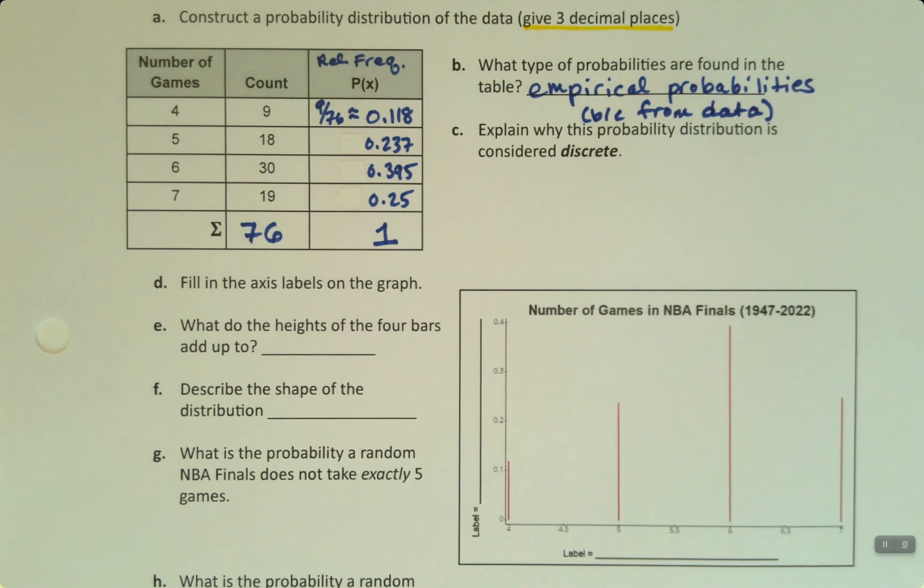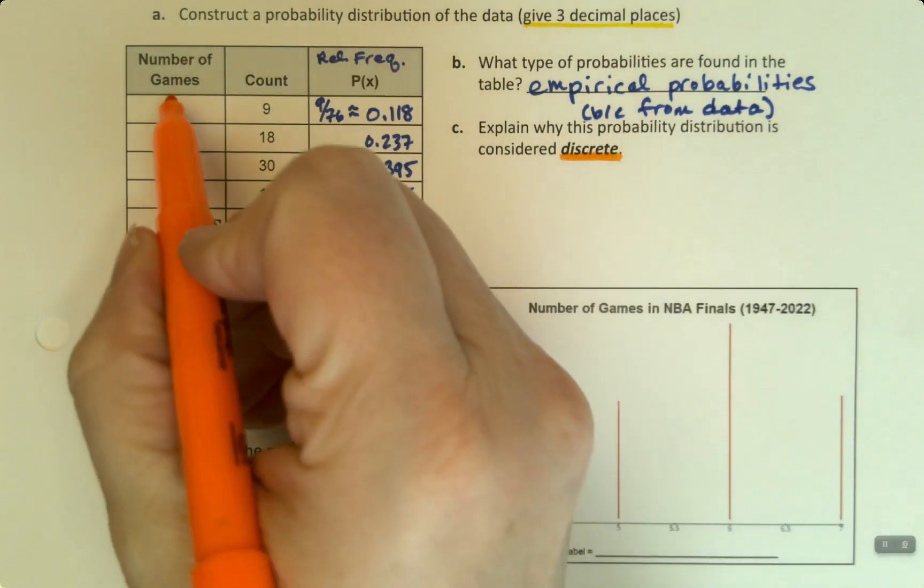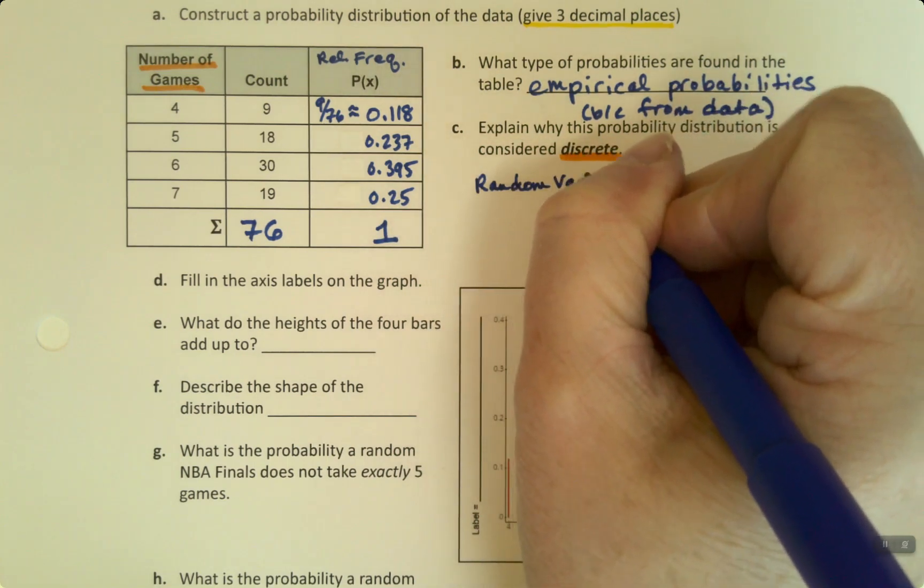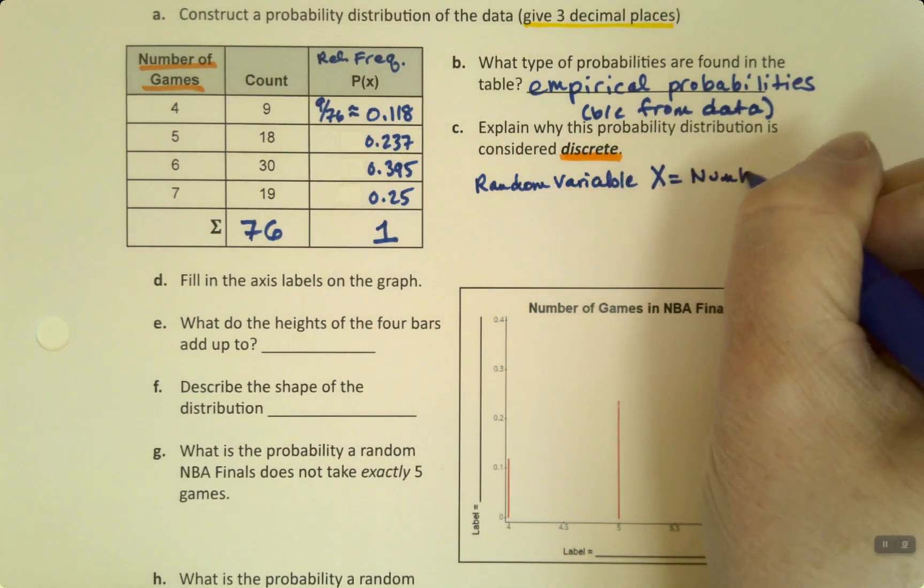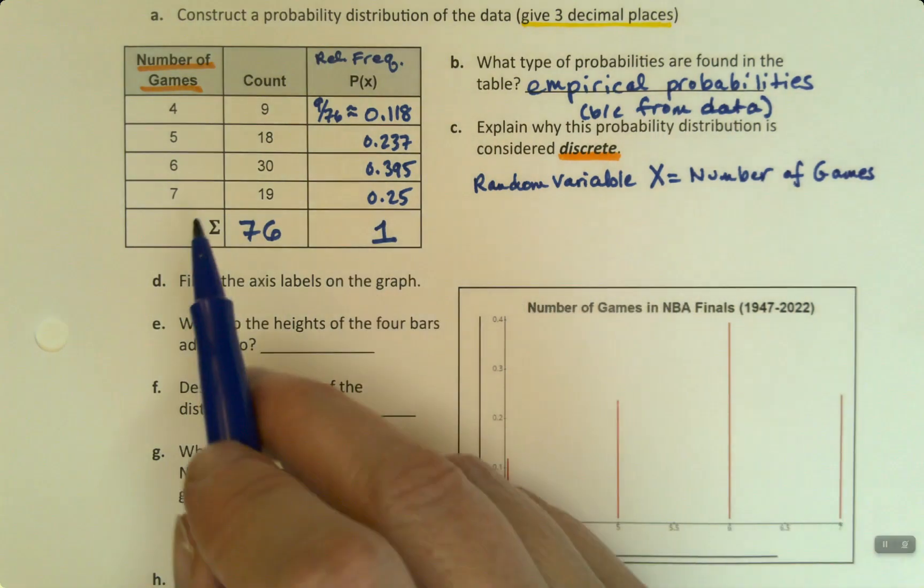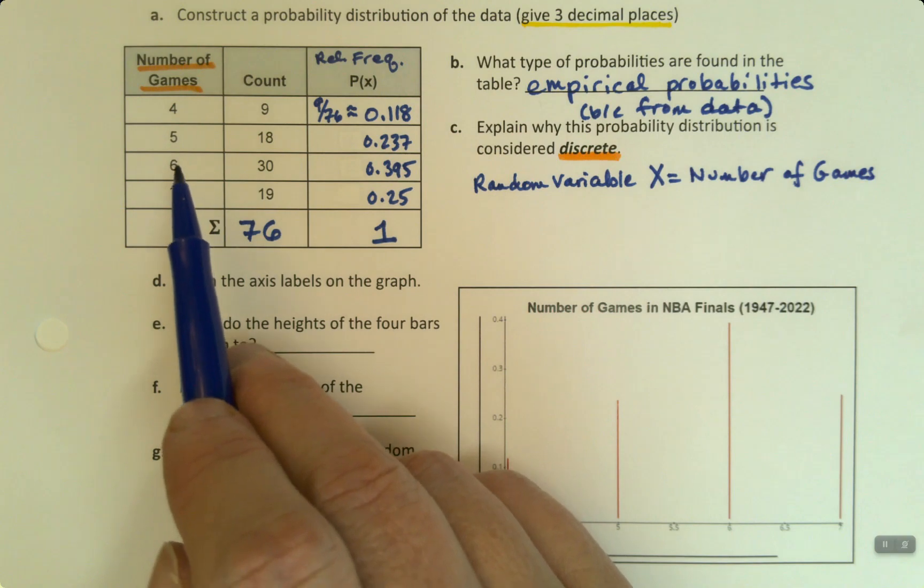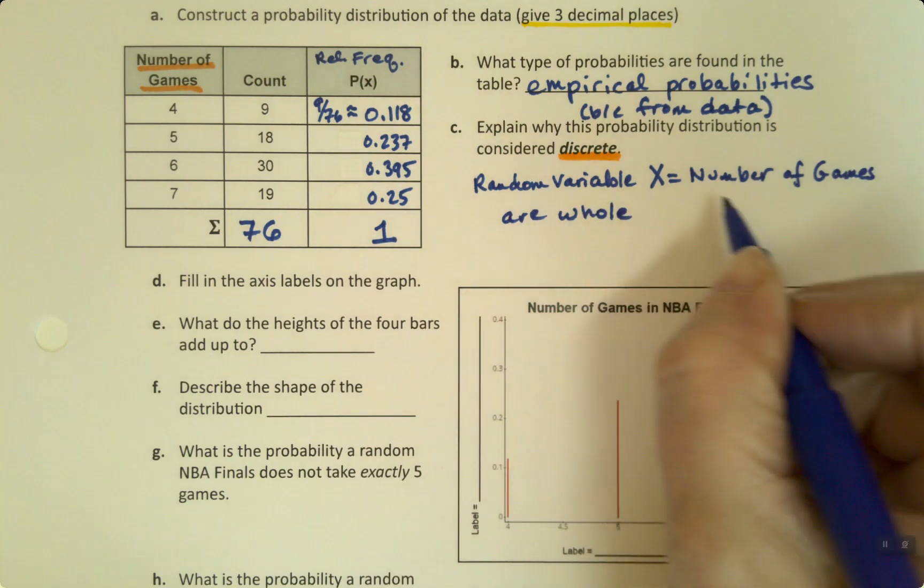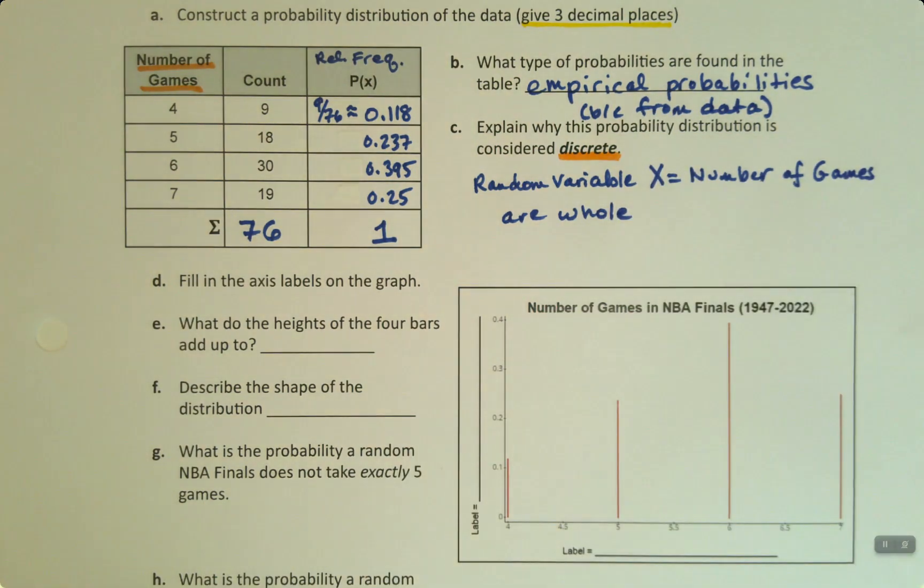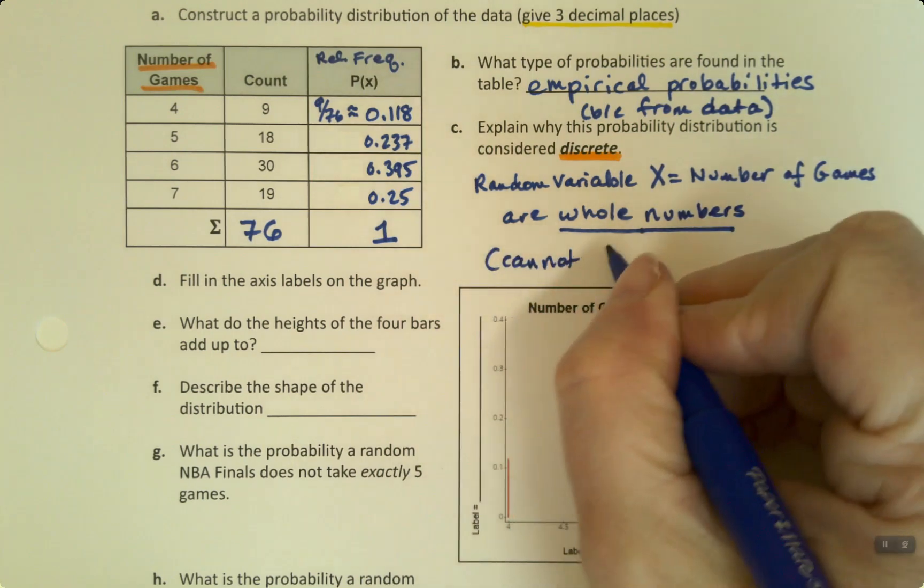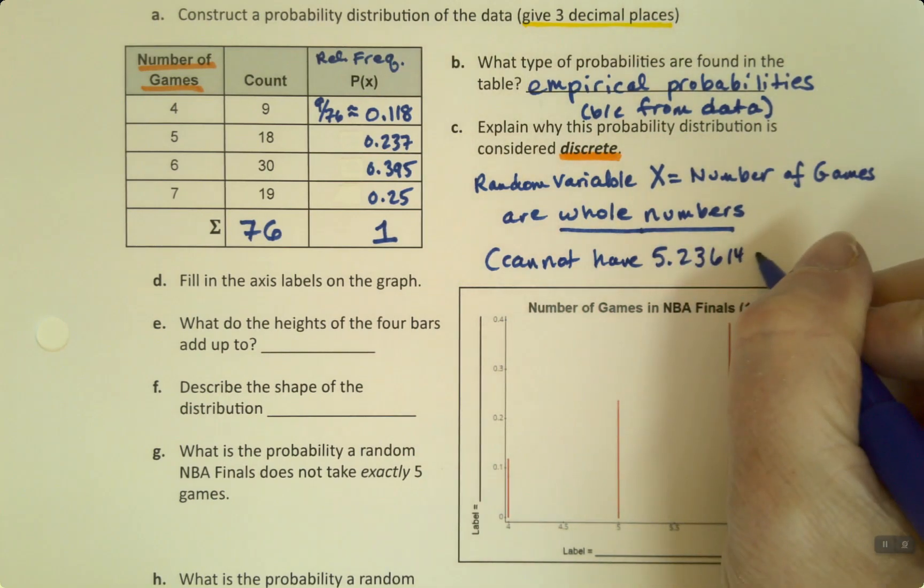Why is this probability distribution considered discrete? For the discrete part, you have to look at the x-axis and think about what this is. The random variable x is the number of games played. That can't be a decimal. You can't play half of a game. The NBA Finals is either five games or six, but it's not going to be 5.232. The number of games are whole numbers.